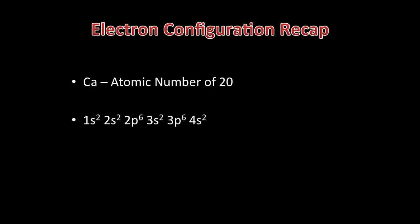In unit one, you only had to write the electron configurations of the elements up to calcium. In this unit, you will need to write the electron configurations of the first row of the D block elements, scandium to zinc. If we recap how to write electron configurations using calcium as our example — its atomic number is 20, so it has 20 electrons — 1S2, 2S2, 2P6, 3S2, 3P6, and finally 4S2.